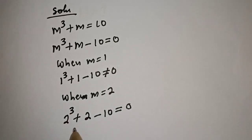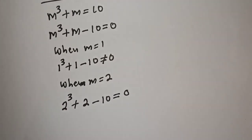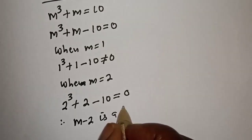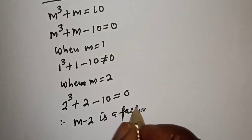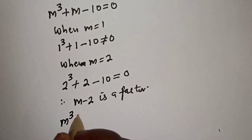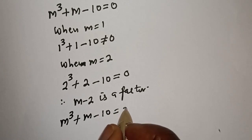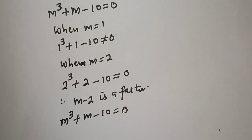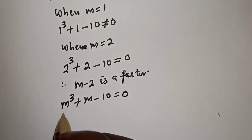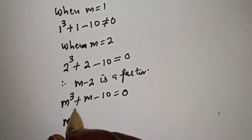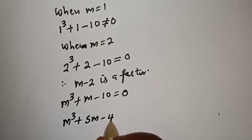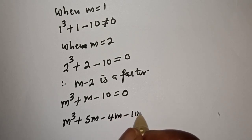That is, 2 raised to the power 3 is 8 plus 2, that is 10. Therefore, m raised to the power 3 plus m minus 10 is equal to 0. This can be expressed as m raised to the power 3 plus 5m minus 4m minus 10 is equal to 0.